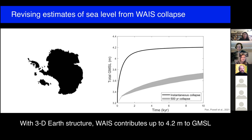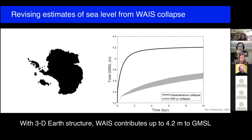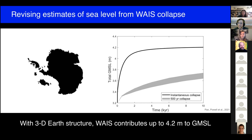Vivian's question from the chat: what effects does the West Antarctic 3D mantle viscosity structure have on future sea level rise on centennial timescales? By 2100, you get a difference between your 1D prediction and your 3D prediction of about 15%. So you get 15% more contribution to global mean sea level, even on that quite short timescale.